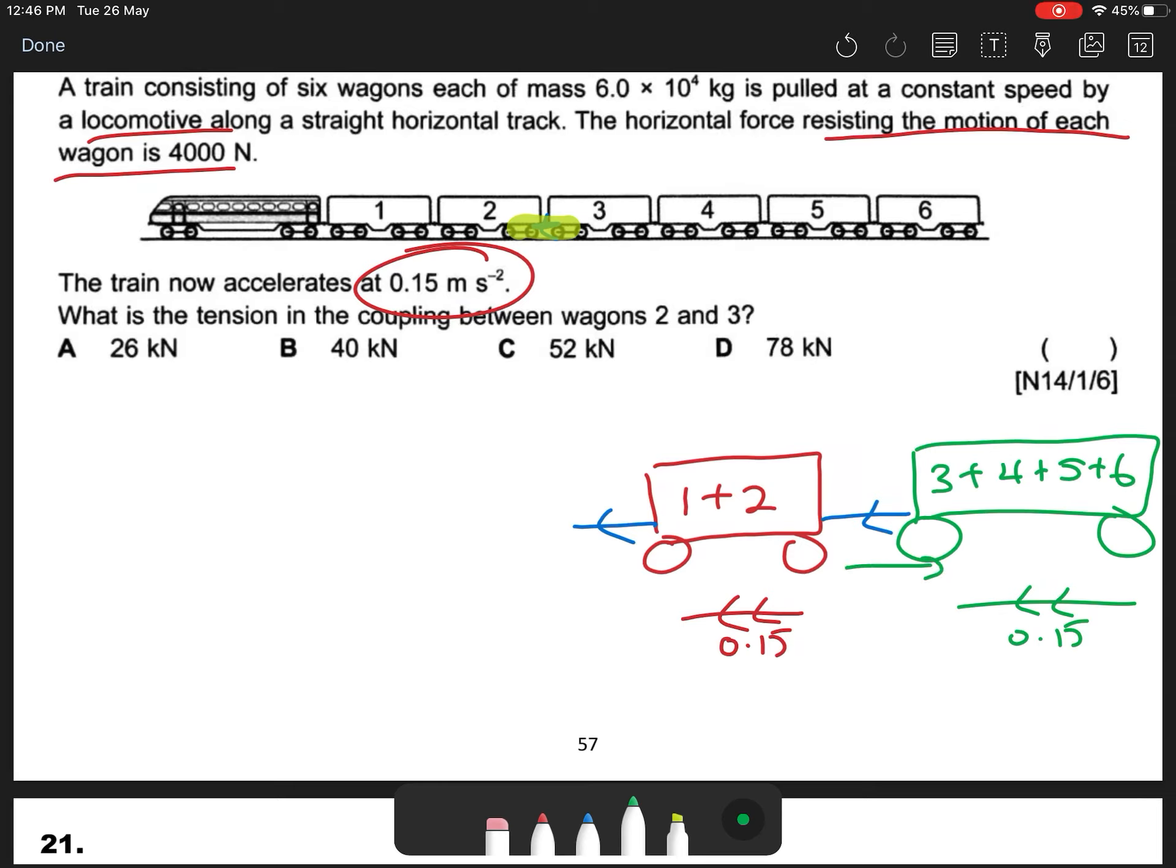The rear group is the friction force. So the friction force is about how many? One wagon is 4000, and the rear has 4 wagons combined together. So the friction force is 16,000 N.